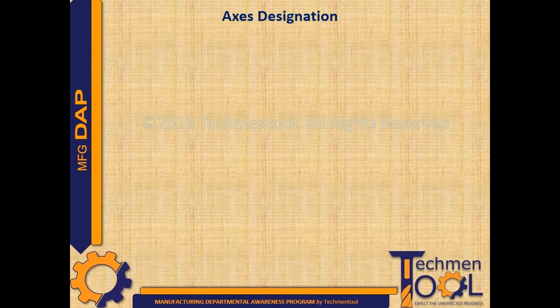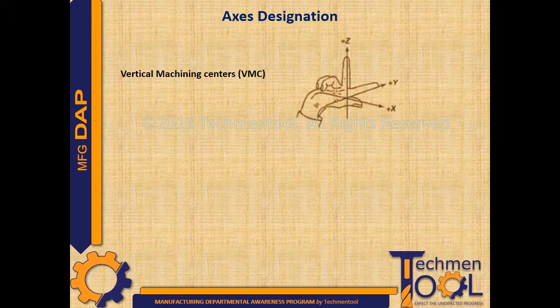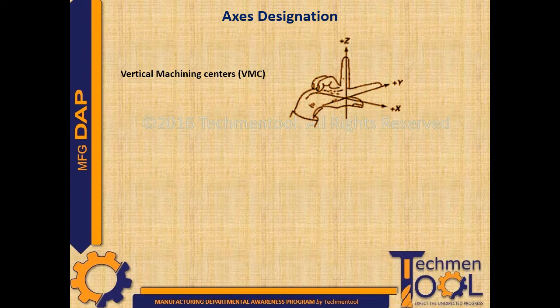Axis designation: in a vertical machining center, as shown in the figure, axis designation is such that the direction of the thumb finger of the right hand indicates the positive X axis, the index finger direction indicates the positive Y axis, and the middle finger direction indicates the positive Z axis.